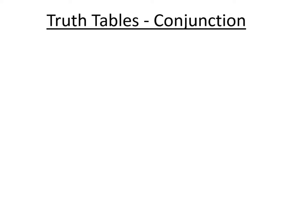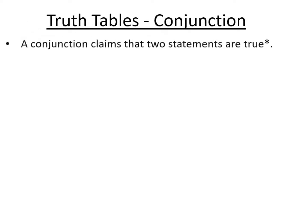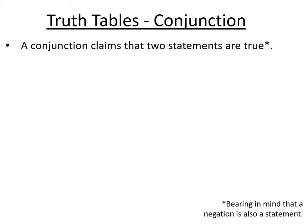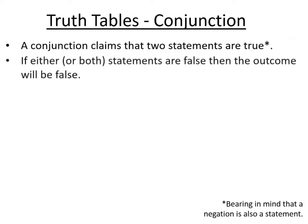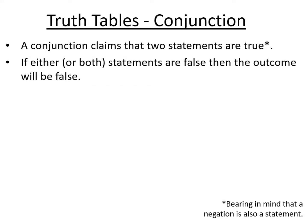The first truth table we're going to look at is the conjunction, which is based on an AND statement. It essentially claims that both simple statements making up the conjunction are true, although we have to remember that there could be a negation in there. If either or both of the statements in a conjunction are false, then the outcome will be false.